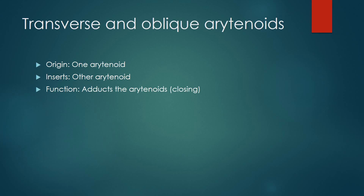The transverse and oblique arytenoids originate from one arytenoid and insert on the other. They function as adductors of the arytenoids, closing the gap between them.